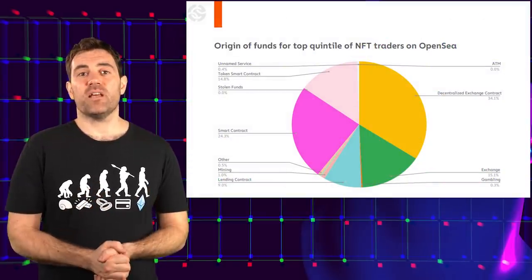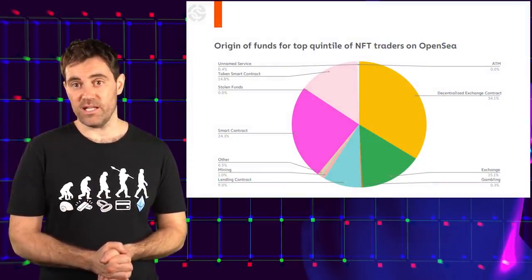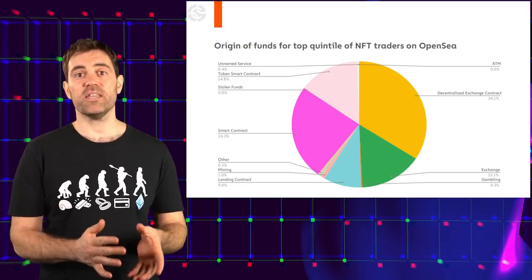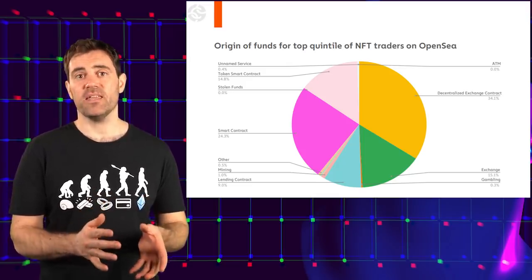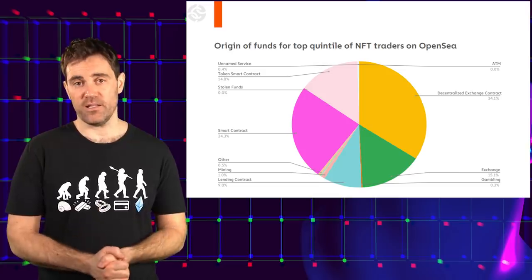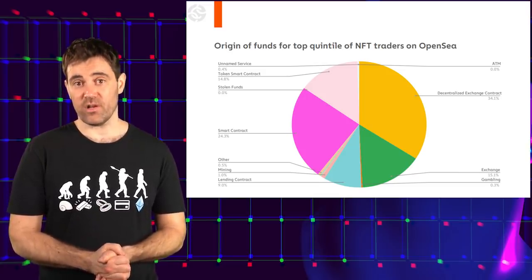The one Chainalysis finding that's harder to explain away, however, is the origin of funds for NFT traders. As you can see, more than a third of these funds came from DeFi protocols and more than 80% came from a smart contract of some kind. Meanwhile, only 15% came from centralized exchanges.